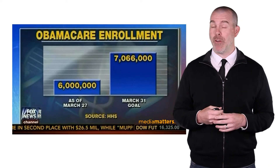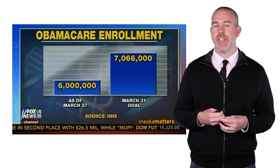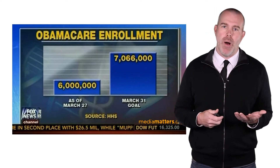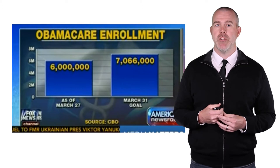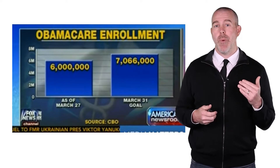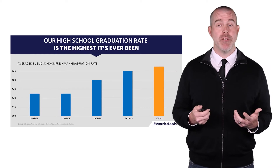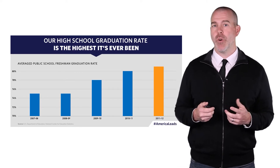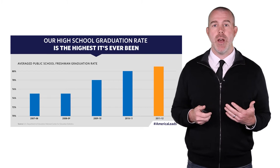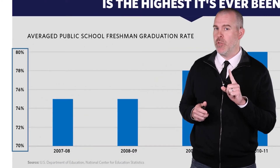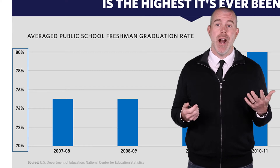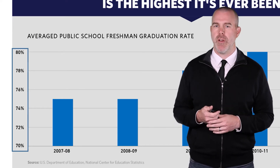This next one is a particularly bad graph about Obamacare enrollment. They had a target goal of seven million and were only at six million, but it looked like it was basically at zero because the y-axis scale was manipulated. They did print a correction — the y-scale should start at zero. Here's another one from the Obama administration showing high school graduation rates going up significantly, but if you zoom in on the scale it started at 70%, so the jumps are relatively small compared to the overall graduation rate.